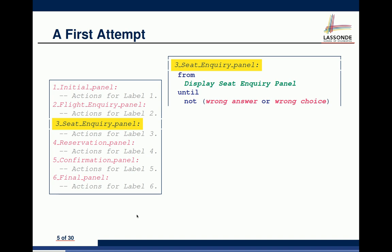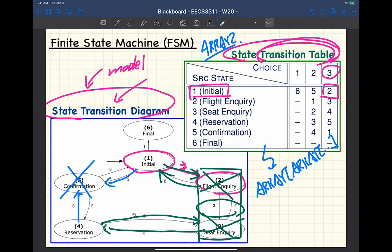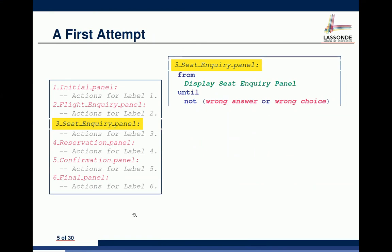The loop uses an 'until' condition. 'Wrong answer' is a Boolean meaning the user's answer is actually wrong — for example, entering an invalid credit card number. 'Wrong choice' is when the user tries to take an action not defined on the current state — for instance, choosing action four when only actions one or three are valid. So I want to spend a moment explaining the logic: until NOT (wrong_answer OR wrong_choice).